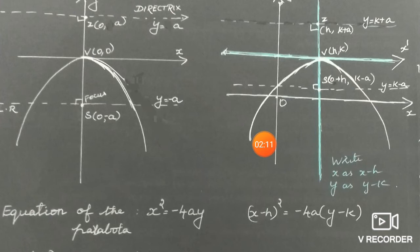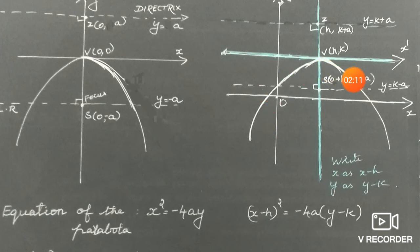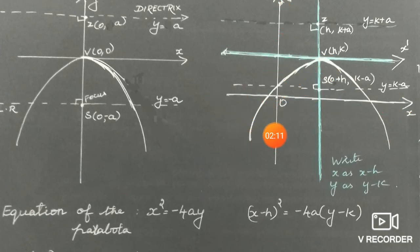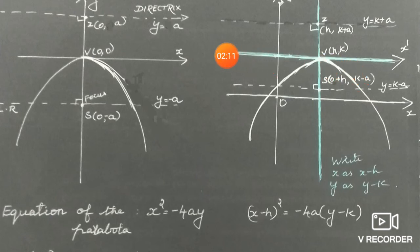If the parabola does not pass through the origin, that means the vertex is not at the origin. Assume the vertex is at (h, k). We still draw the x-axis and y-axis as usual. The parabola has its turning point at (h, k), so we set up a temporary shifted coordinate system.